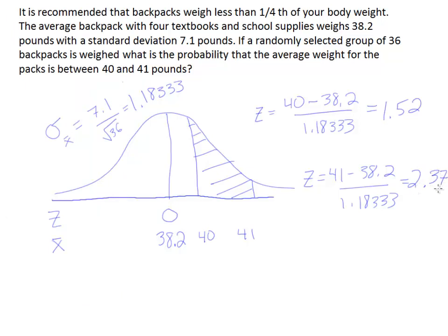So now with that value and this value, I can put them on the curve and look them up. So 1.52, 2.37. If I look up 1.52, I get the area from here to here. If I look up 2.37, I get the area from here to here. So I'll have to subtract the two areas so that I end up just with the area that I want.